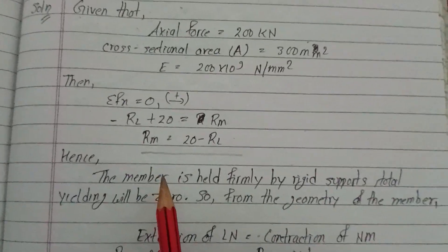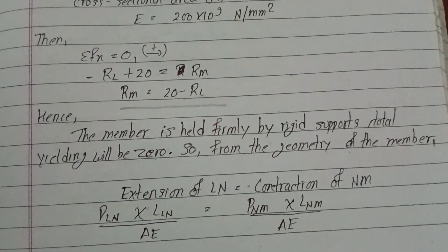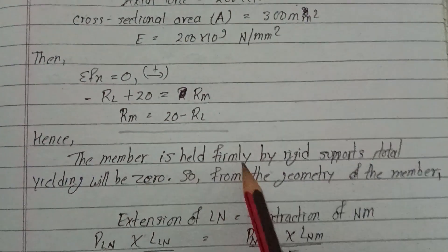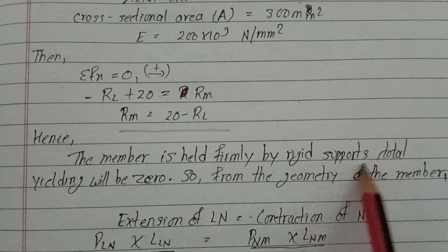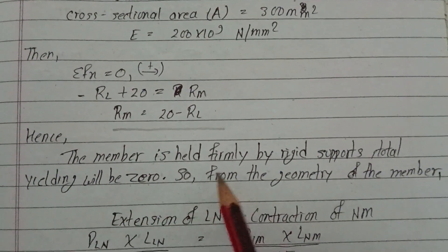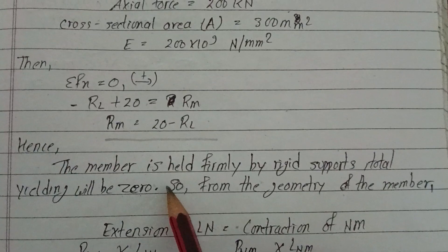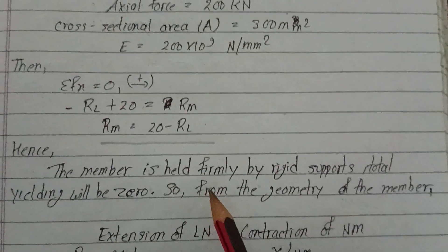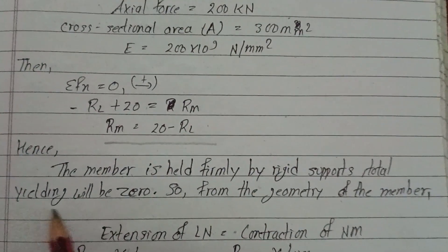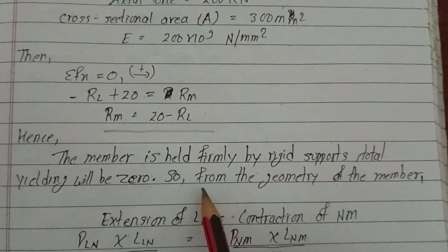The member is held firmly by the rigid support, so the total yielding will be zero. Since the member is held firmly by the rigid support, the total yielding is zero. This gives us two cases.